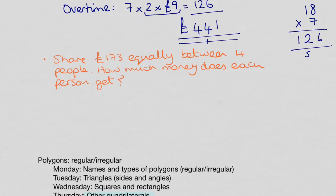Next question. Share £173 equally between four people. How much money does each person get? Well, I would honestly just do a straight divide for this one.